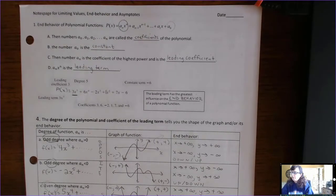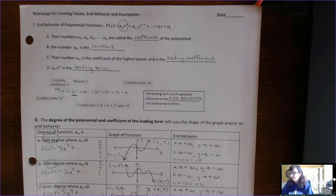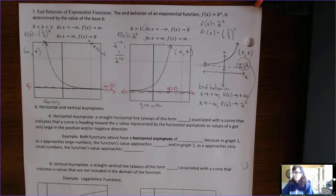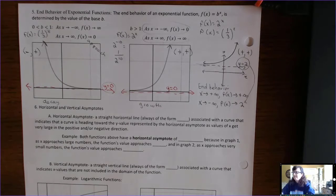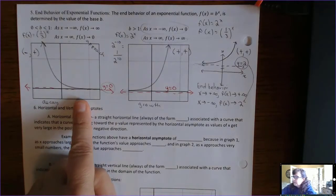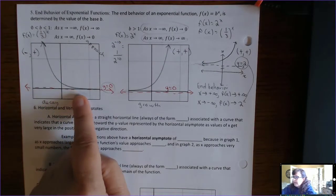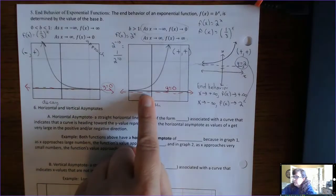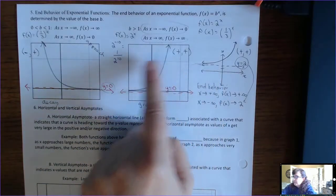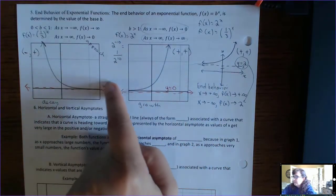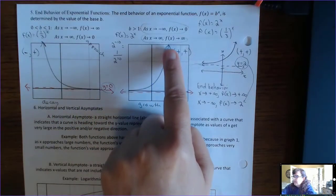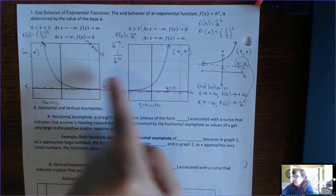This lesson comes from the notes page for limiting values, behavior, and asymptotes. Let's pick up on page 2 where we've mentioned asymptotes with exponential functions. Exponential functions all have some sort of horizontal asymptote because they're all going to level off at some value, either in the positive infinity direction or the negative infinity direction.